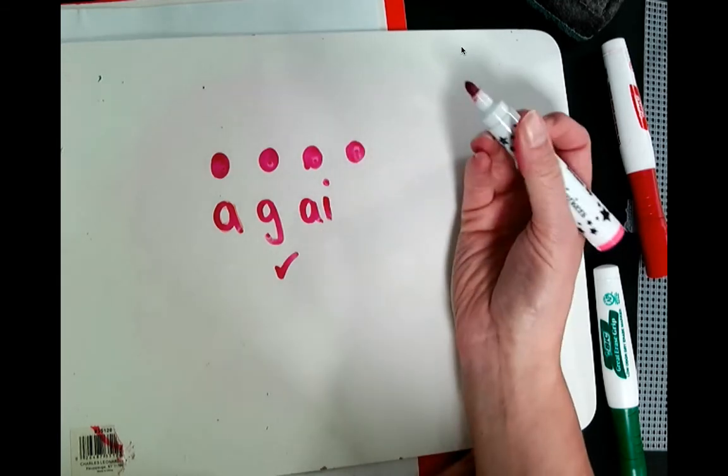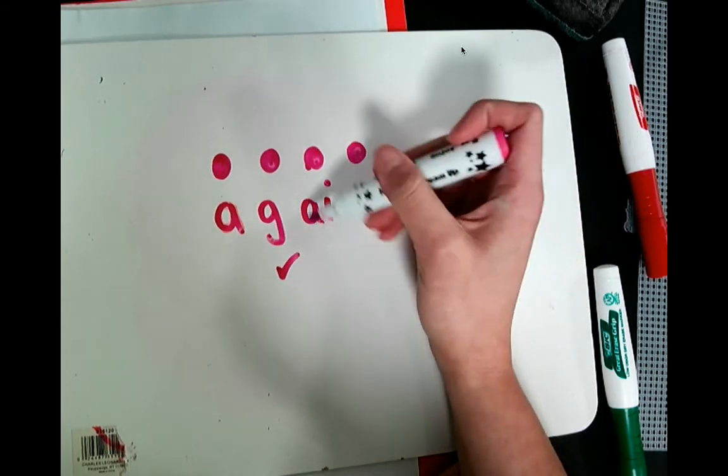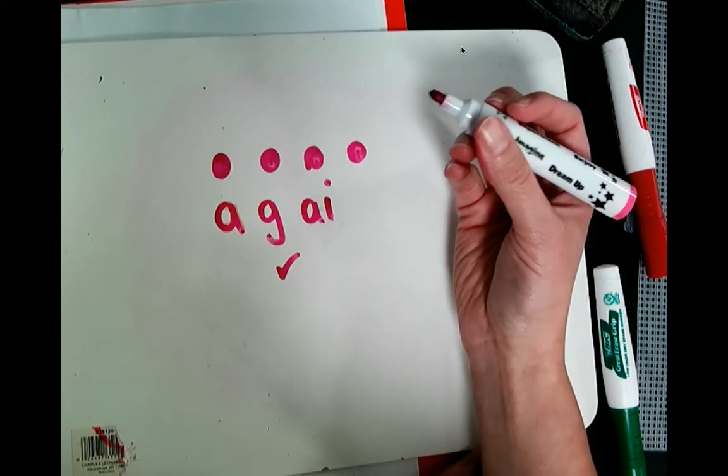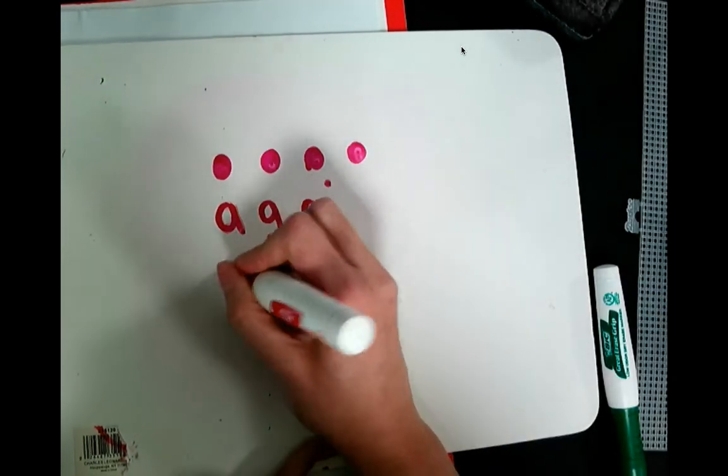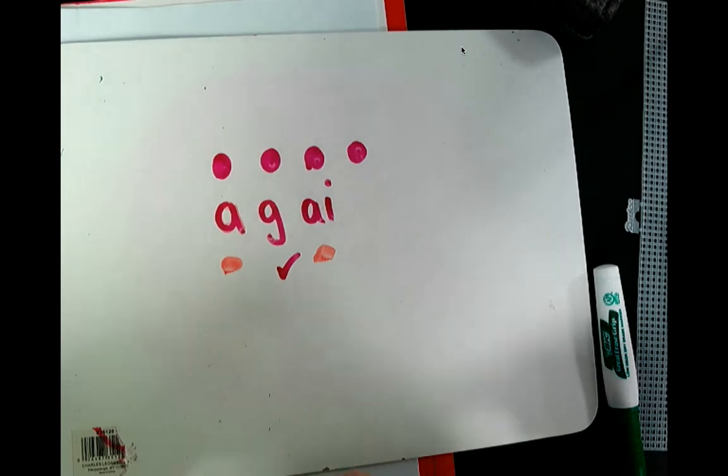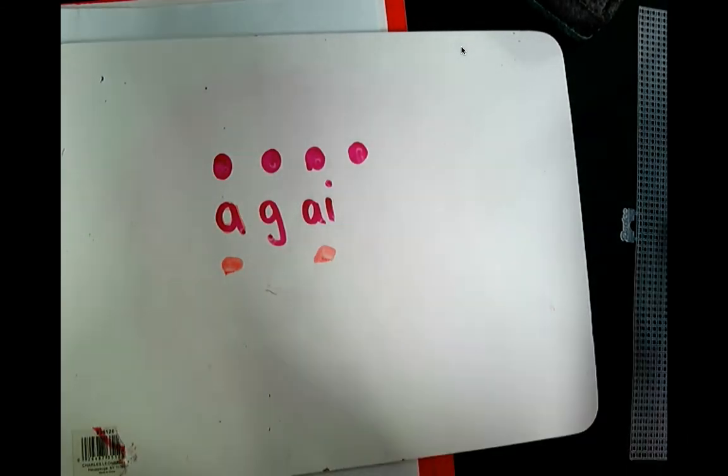This is A-I. That's supposed to make a long A sound. Two vowels go walking, the first one does the talking, and always says its name. Well, not in this case. Oddball. So I'm going to mark these red. Red odd. Odd, odd. We'll leave that check. We'll actually mark this one green. This one is green. That's good to go.